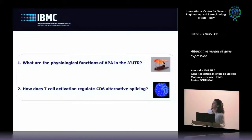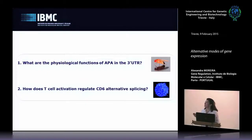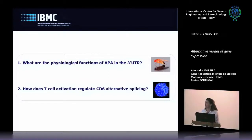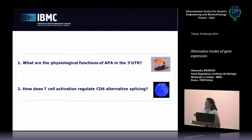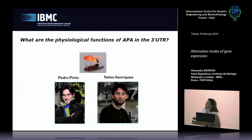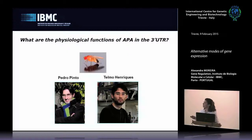What I will tell you about now is the work we've been doing. One story asks what are the physiological functions of alternative polyadenylation in the 3'UTR at the organism level. Because this question cannot be addressed easily in humans or mice, we chose Drosophila, where we can directly address the physiological function of this process. This work was started by Pedro Pinto, a PhD student in the lab, and then followed by Thelmo Henriques, another PhD student, now in Karen Adelman's group; Pedro is now in Heidelberg.